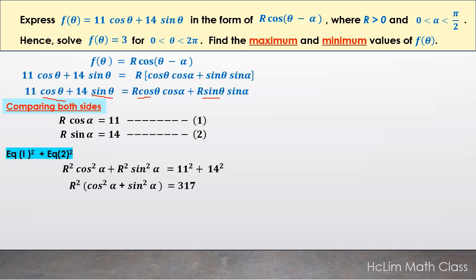We square both equations: R² cos² α + R² sin² α = 11² + 14². This gives R²(cos² α + sin² α) = 317, so R = √317, and the value of R is positive.